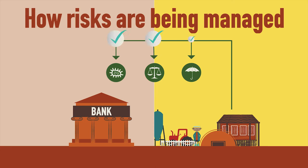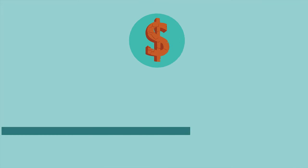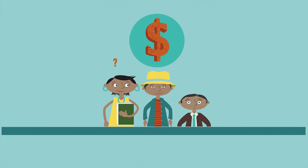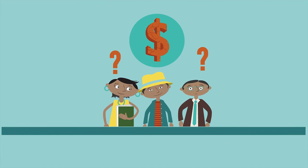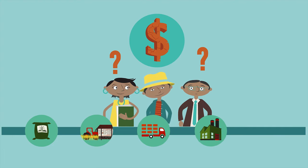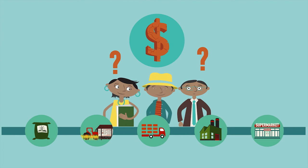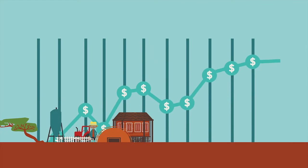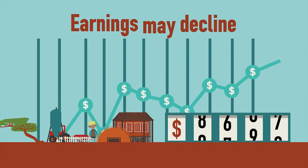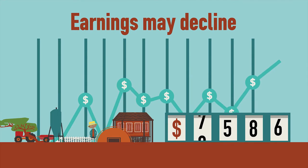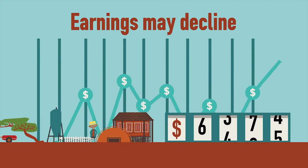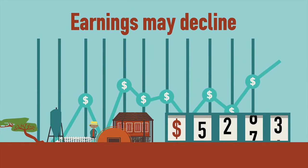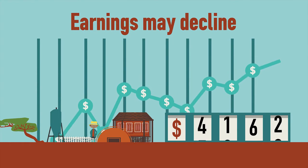how those risks are being managed. Price risk is an issue for many of the participants operating in or across agricultural value chains. It's the risk that the earnings of an enterprise may decline due to price fluctuations for the commodity traded.